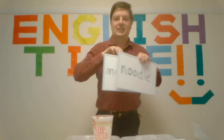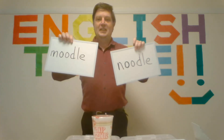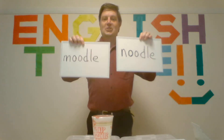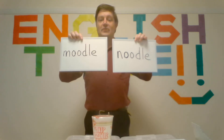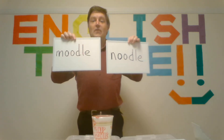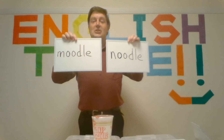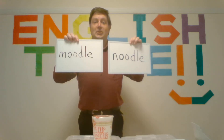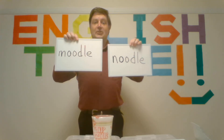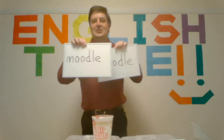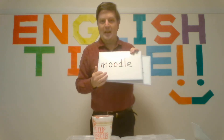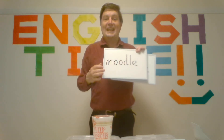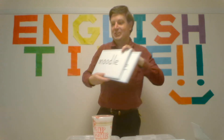Noodle. I like noodles. So, which is correct? Five seconds. Five, four, three, two, one. The answer? This has a M — it would be a Moodle. So, egg. Noodle.